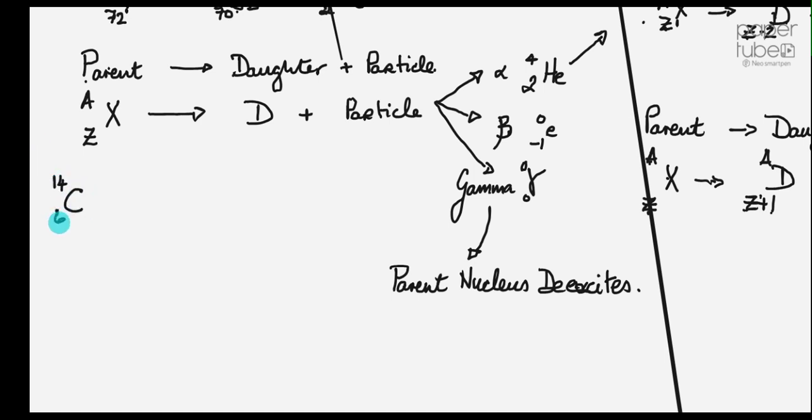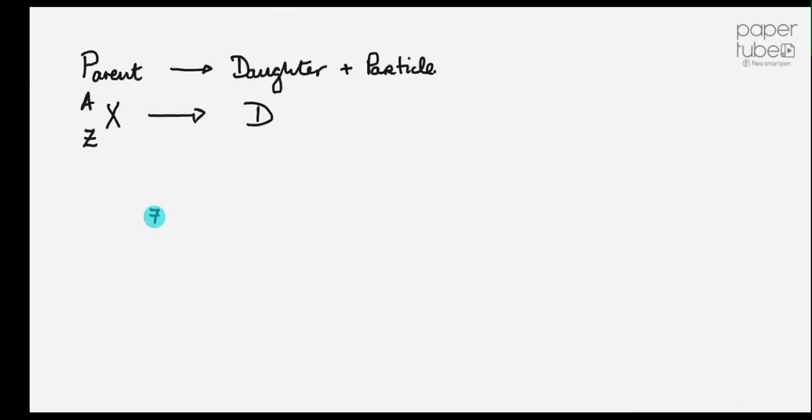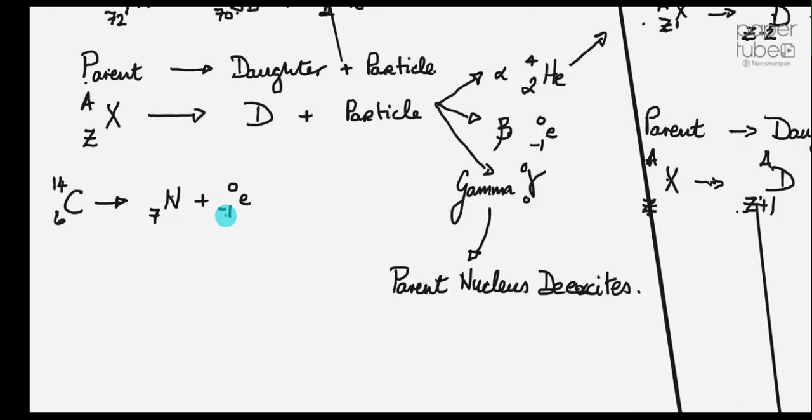Carbon-14 goes to nitrogen plus a beta particle 0, -1 e. Now look, remember here's the rules over here. So we have to get these numbers. So that must be 7, because 7 add minus 1 is 6. And that must be 14. 14 add 0 is 14. Let's do the next one.